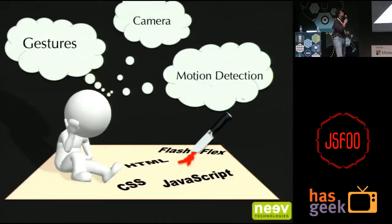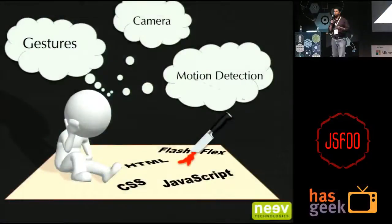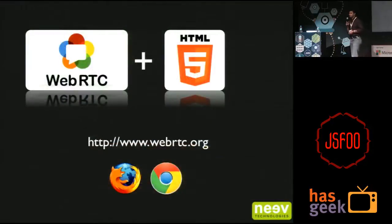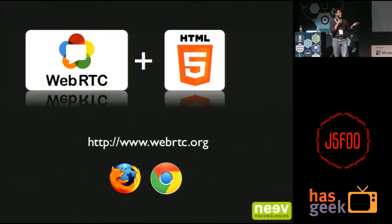You're probably wondering — this guy is talking about gestures, cameras, motion detection, and you're at a JS conference, so most probably you're going to be working with Flash, HTML, or JavaScript. Flash and Flex were really great earlier; you could do a lot of stuff with that. Unfortunately, that got killed by somebody. So you're stuck with HTML, CSS, and JavaScript. Until about a few years back, there was little you could do with it. Thankfully, WebRTC came in — about two years back is when the project really started — and now Firefox and Chrome support that. With WebRTC and your good old HTML5 canvas, you can start doing stuff with motion detection.